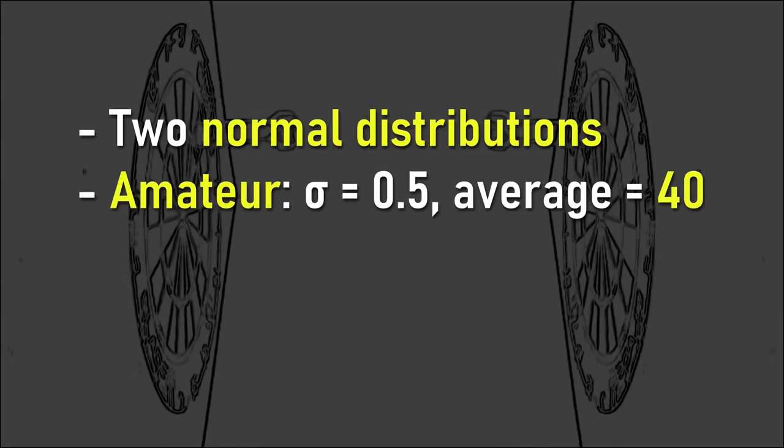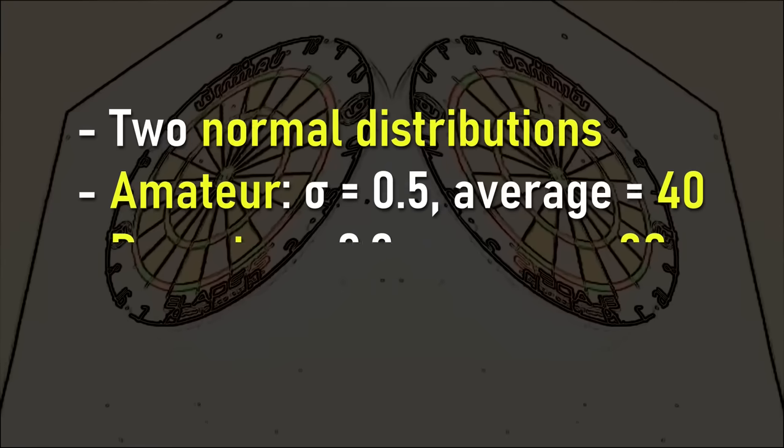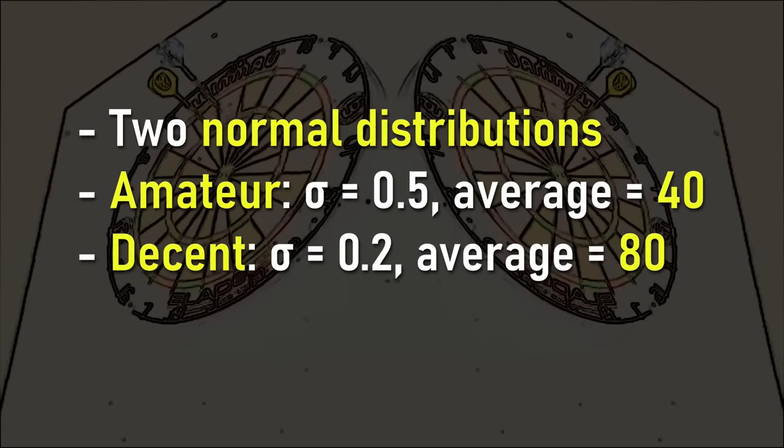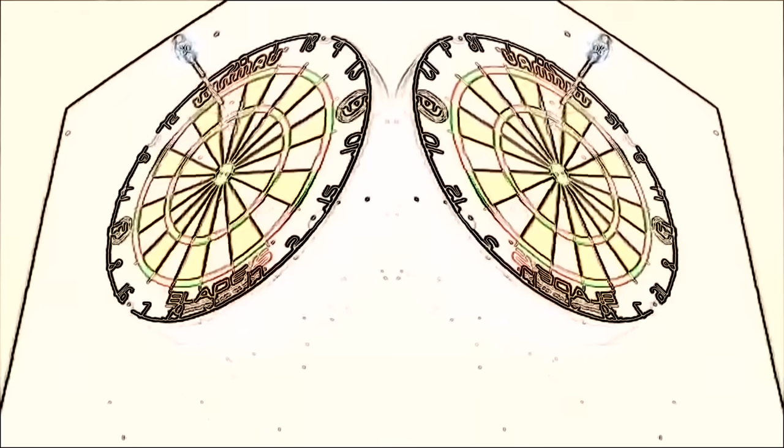So an accuracy of 0.5 represents a 3 dart average of around 40, which is about an amateur level. An average of 80 is decent, but that's still not quite professional level, and 100 is the average of a top professional.